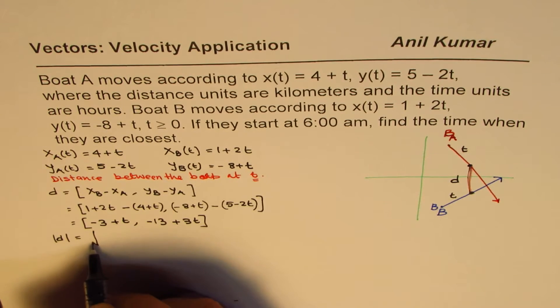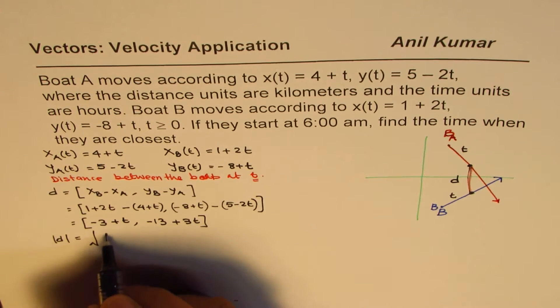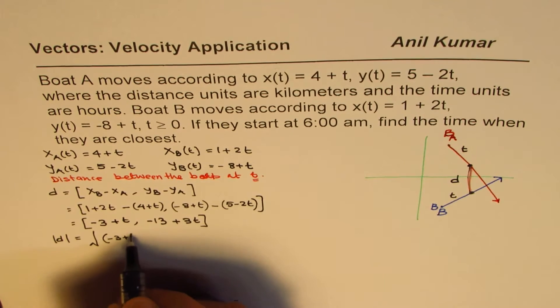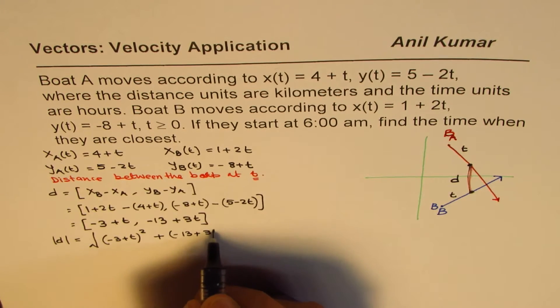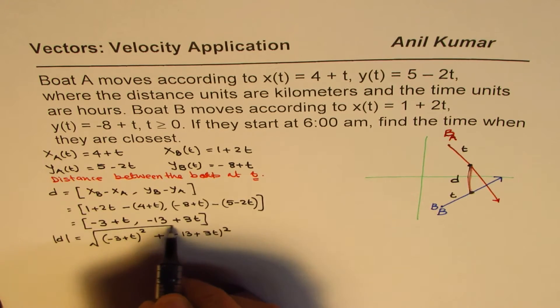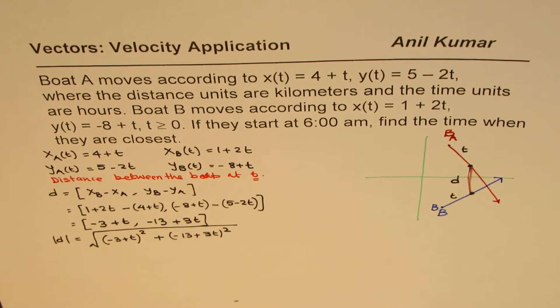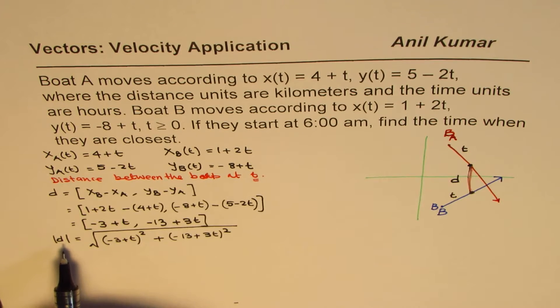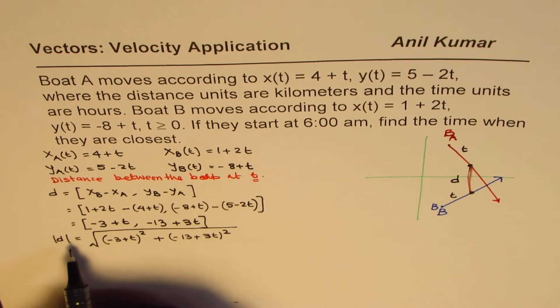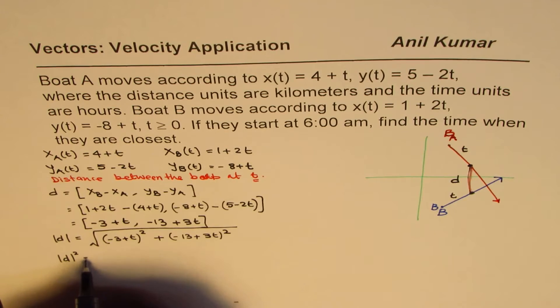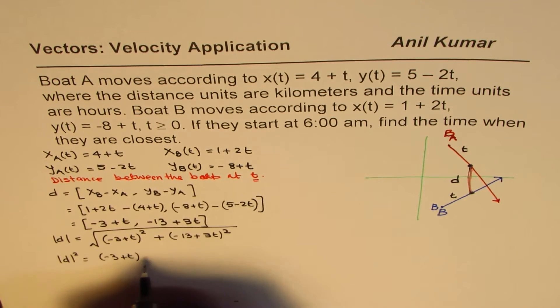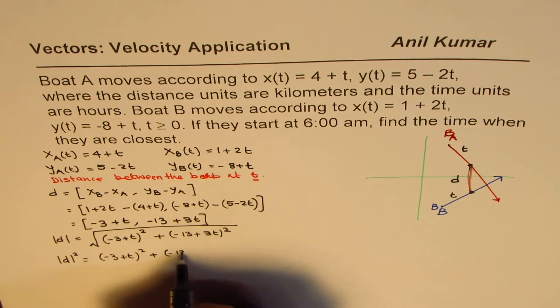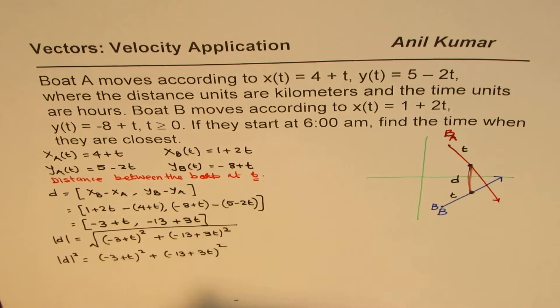Now what is the magnitude of this distance? The magnitude of this distance would be square root of A square plus B square. So which is square root of (-3 + t)² + (-13 + 3t)². So that becomes the magnitude.